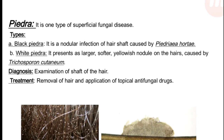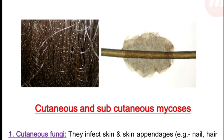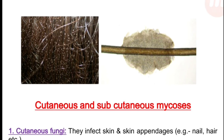Piedra is a superficial fungal disease of two types: black piedra and white piedra. Black piedra is a nodular infection of the hair shaft caused by Piedraia hortae. White piedra presents as large, soft, yellowish nodules on the hair caused by Trichosporon cutaneum. Diagnosis: examination of the shaft of the hair. Treatment: removal of the hair and application of topical antifungal drugs. In figures you can see the nodular infection of the hair shaft.